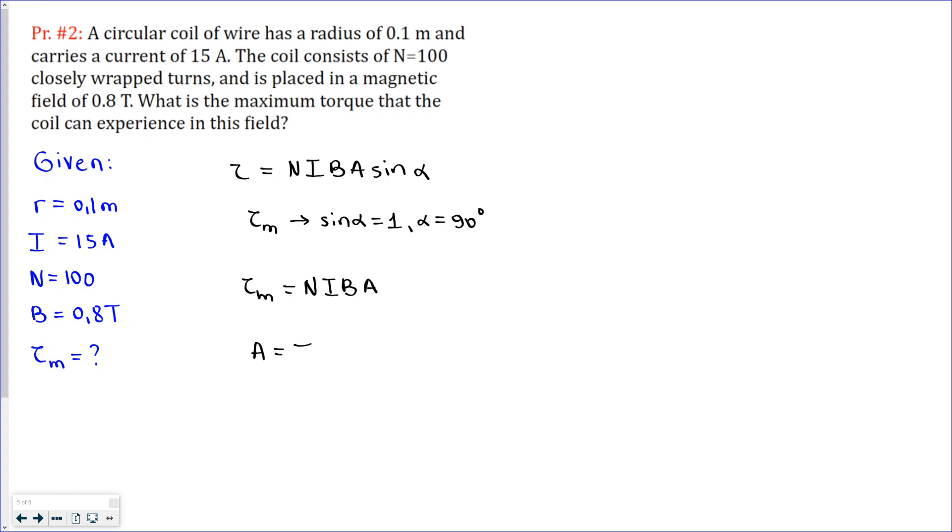Area of the circle will be pi r squared. Let's take pi as 3, radius is 0.1, so it is 0.03 meter squared. Now we have all the givens.